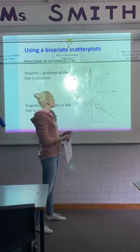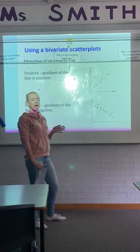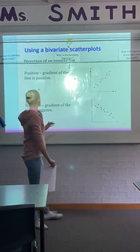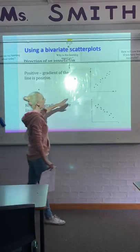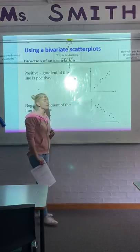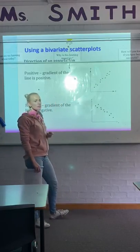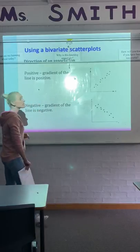Then we have the direction of an association. Just looking at the linear form now, we have two directions that our lines go in. The first one is positive. Our dots or our line is increasing from left to right, going up. The gradient of the line would be positive, so this has a positive association.